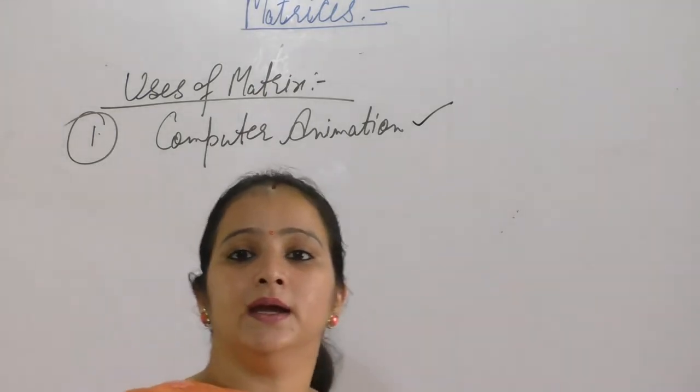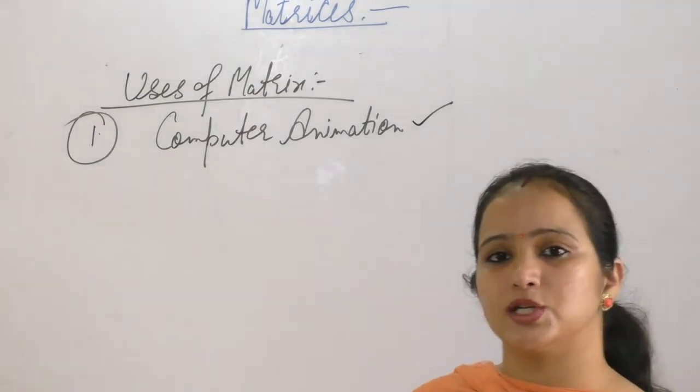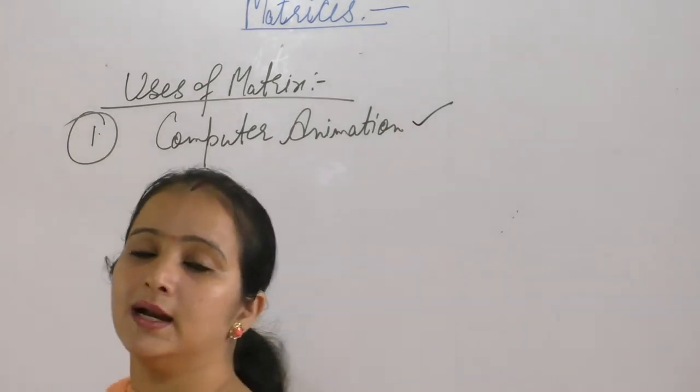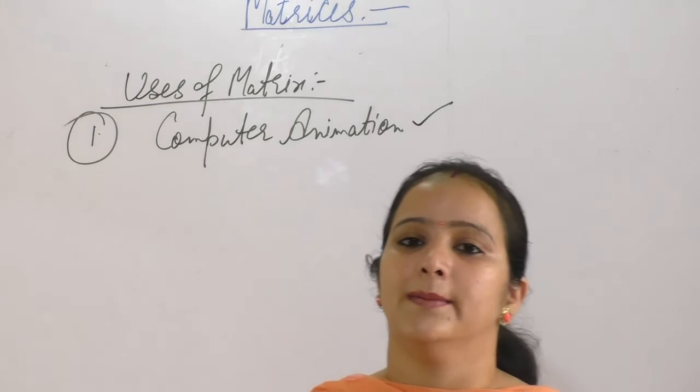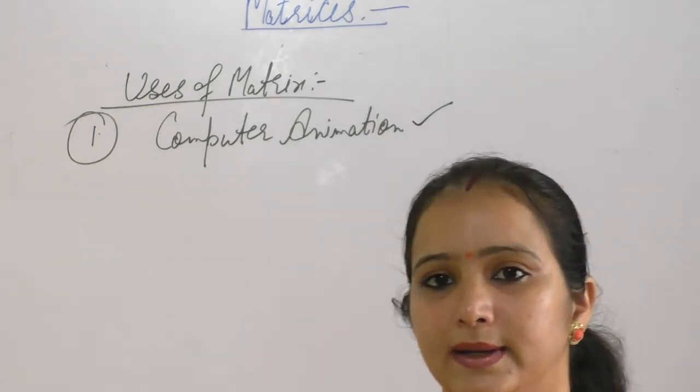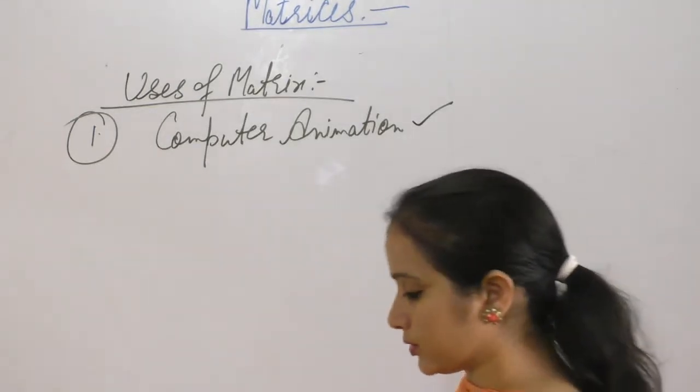So that is the use of matrix in computer animation, in robots, robotics or automation. The movements of robots are based on the matrices, that is rows and columns. Matrices are the base elements for the movement of robots.